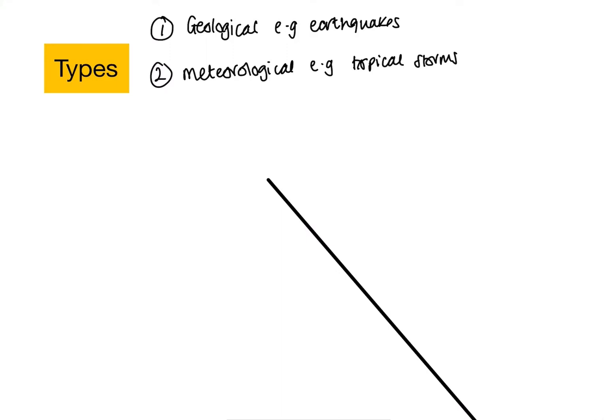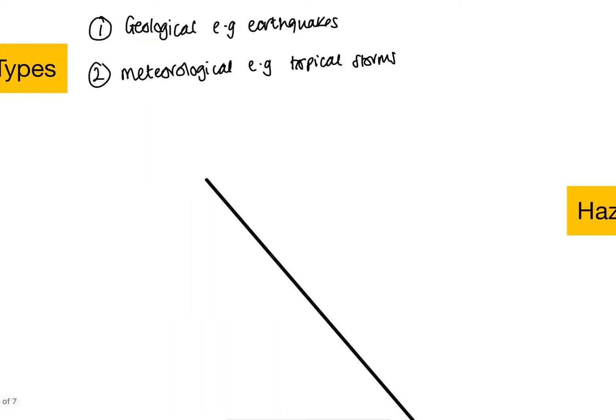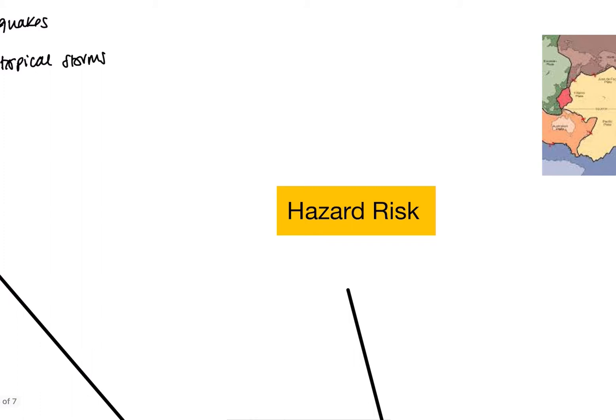So if you understand that there are two different types of hazards, we also have factors that affect what we call hazard risk. Hazard risk is just the probability that people will be affected by a hazard. The first thing that affects this is something called vulnerability. Vulnerability could be caused by things like having more people in a hazardous area. That would put the population at higher risk, therefore make them quite vulnerable to the hazard.